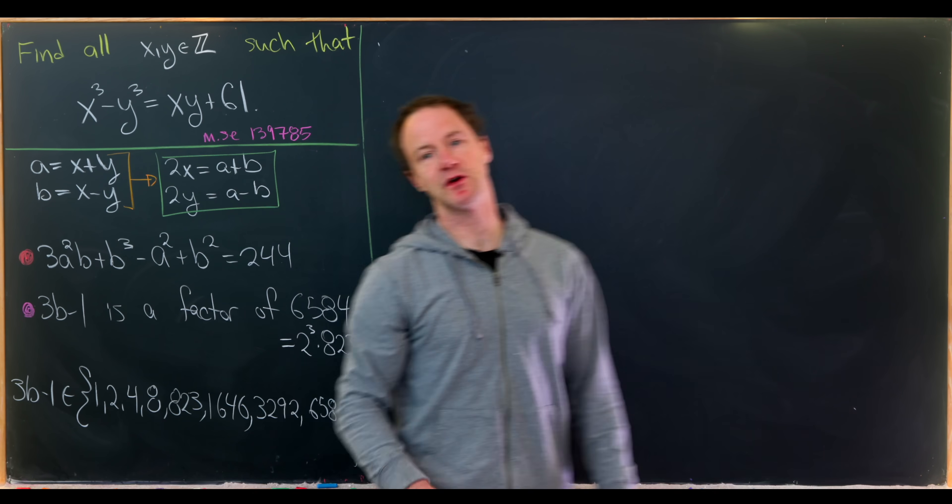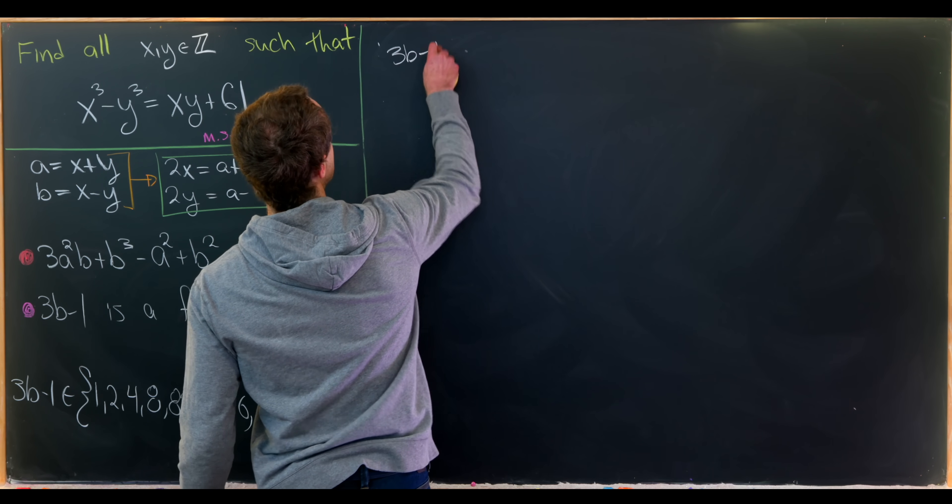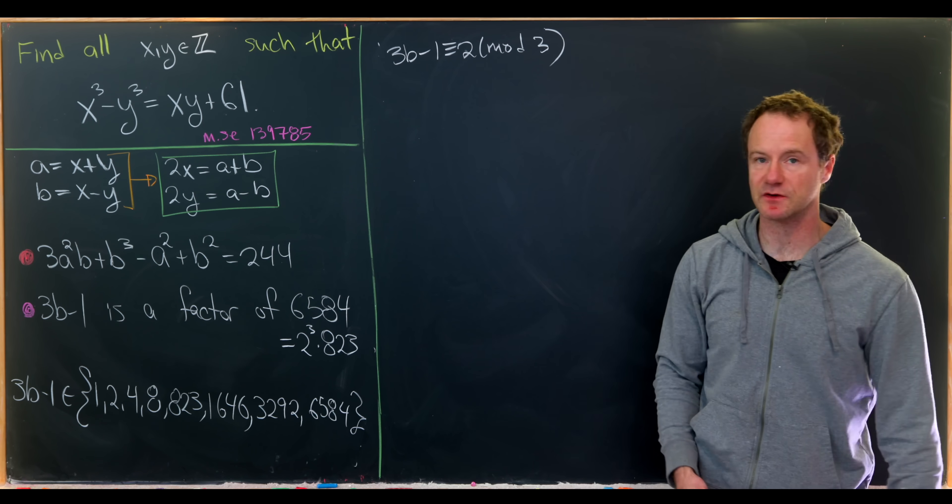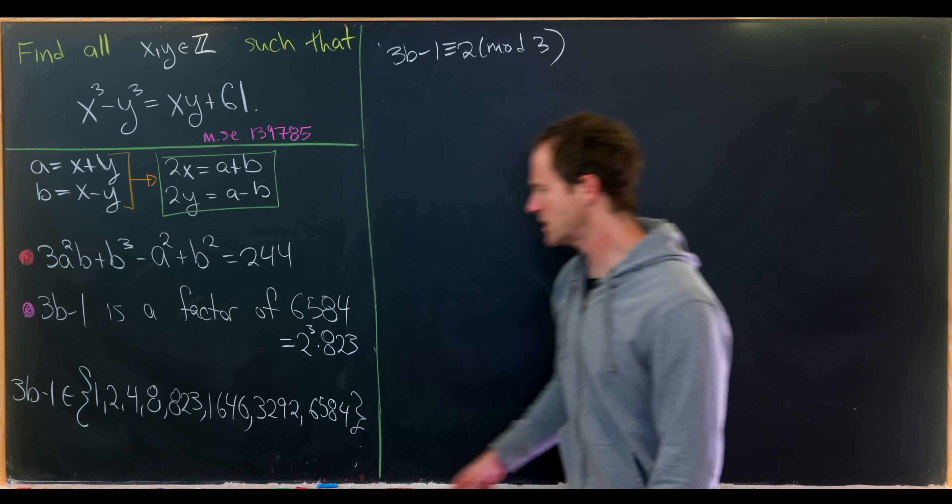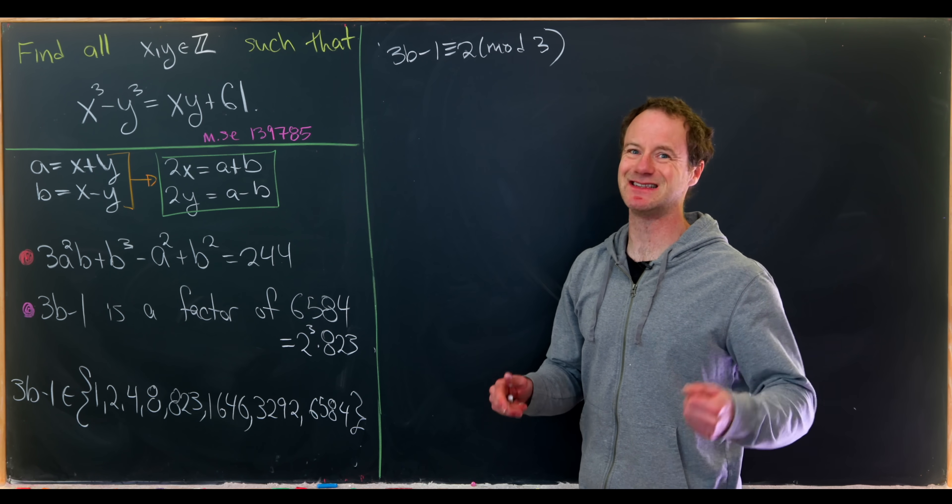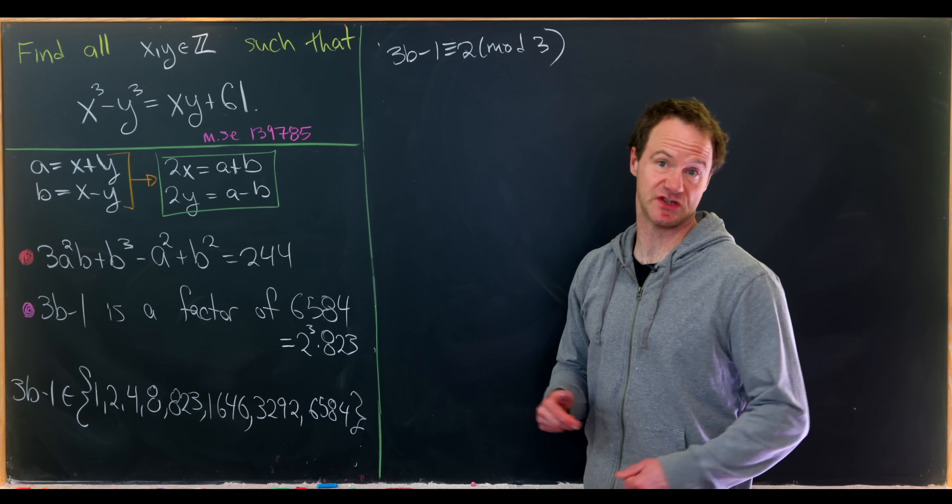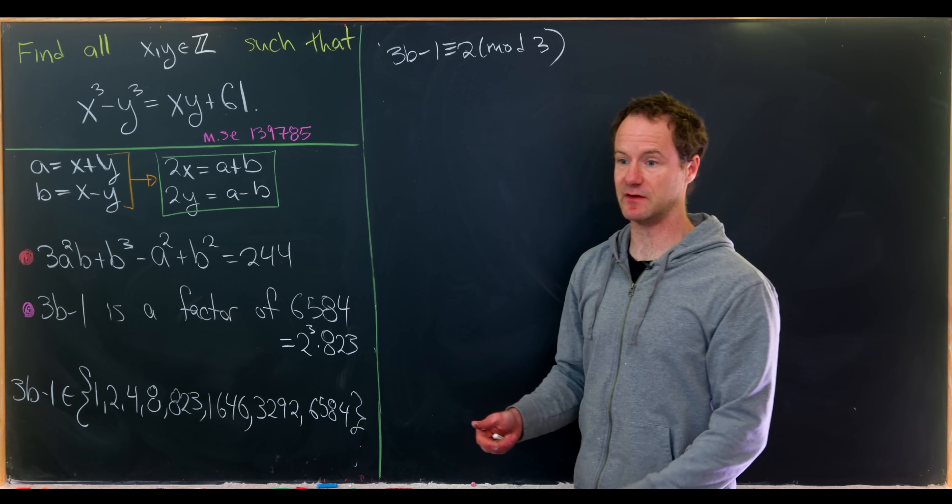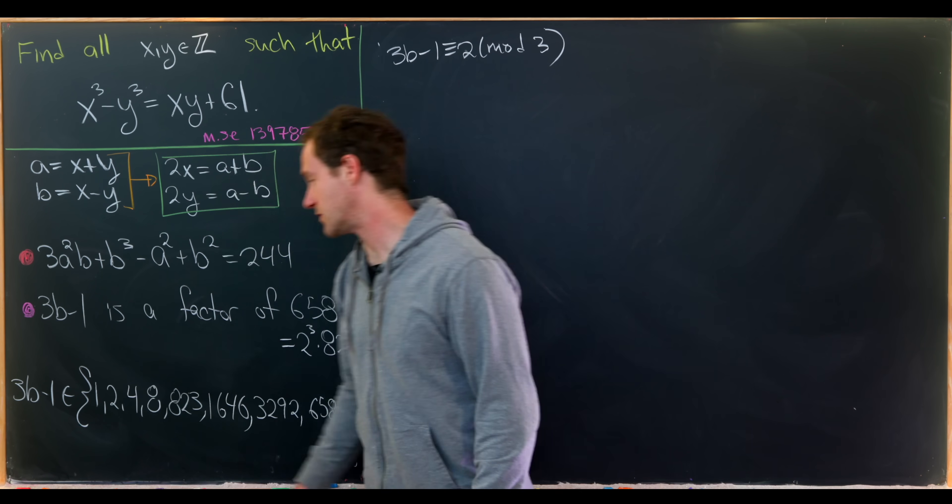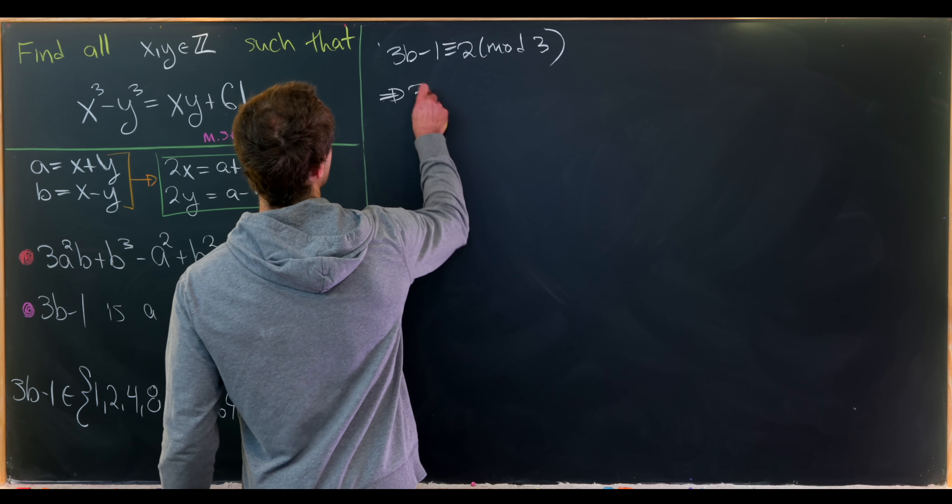But now we can eliminate some of those fairly easily. Let's notice that 3b minus 1 is congruent to 2 modulo 3. So that means it has a remainder of 2 when dividing by 3. So really it can only be the members of this list that have a remainder of 2 when dividing by 3. Luckily there's this nice digit sum rule for finding the remainder. 1 has a remainder of 1 when you divide by 3, so 3b minus 1 is not allowed to be 1.